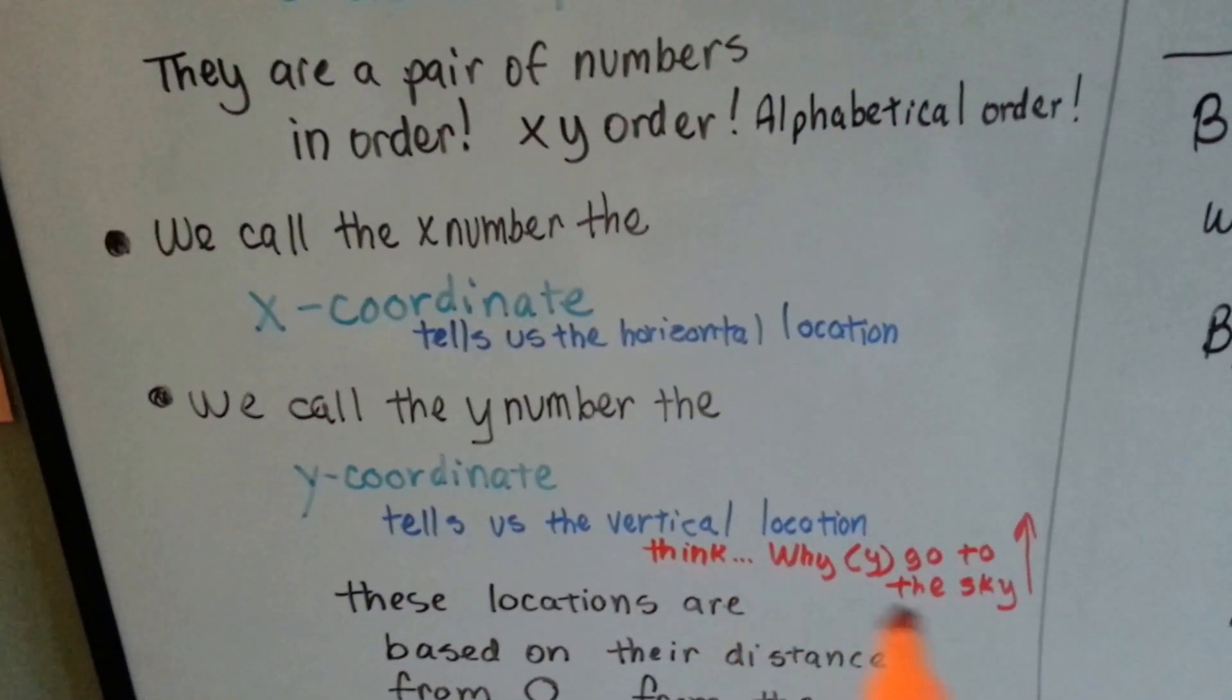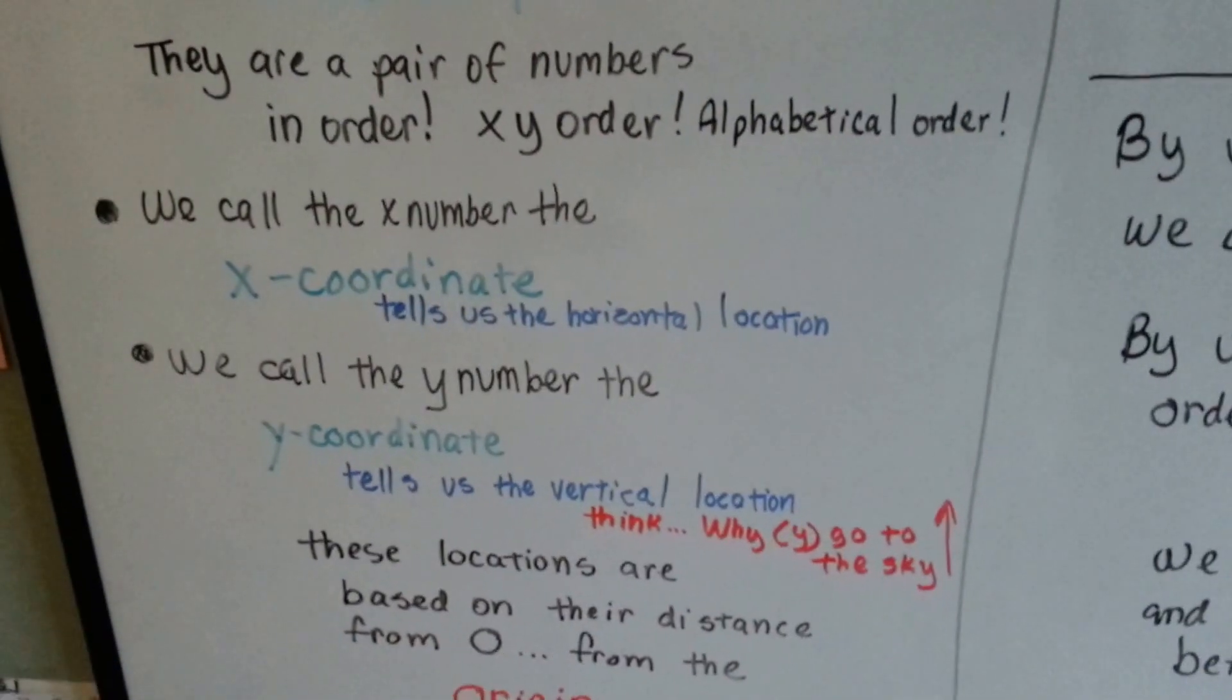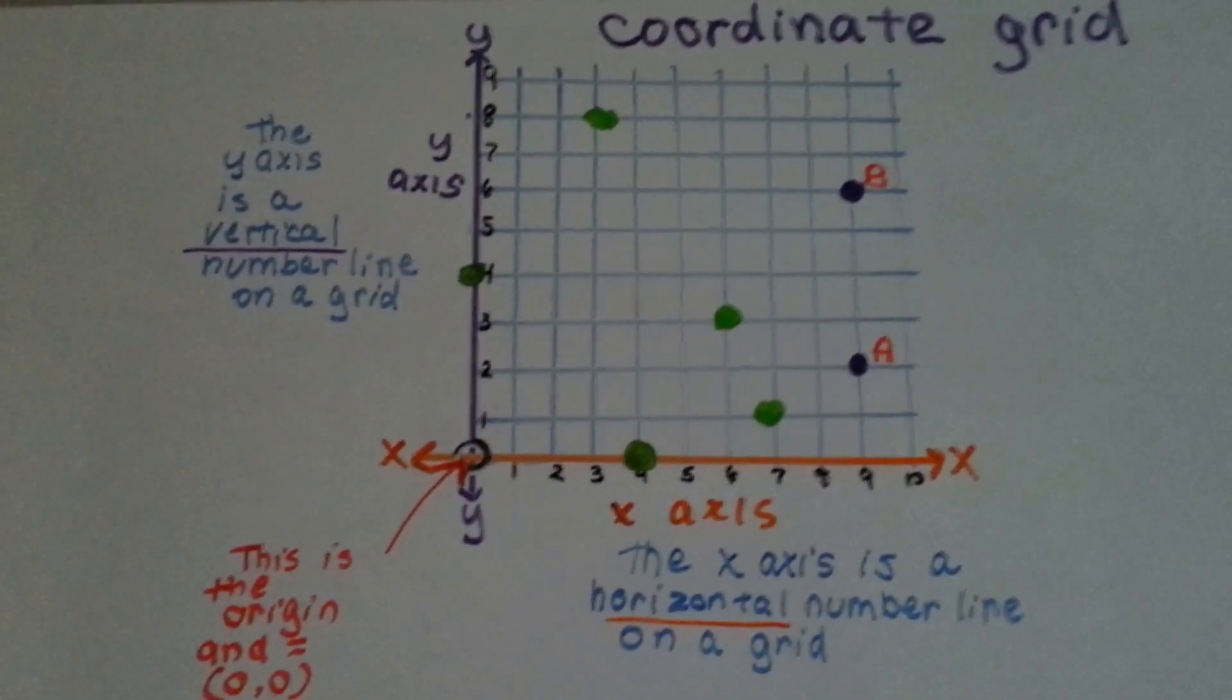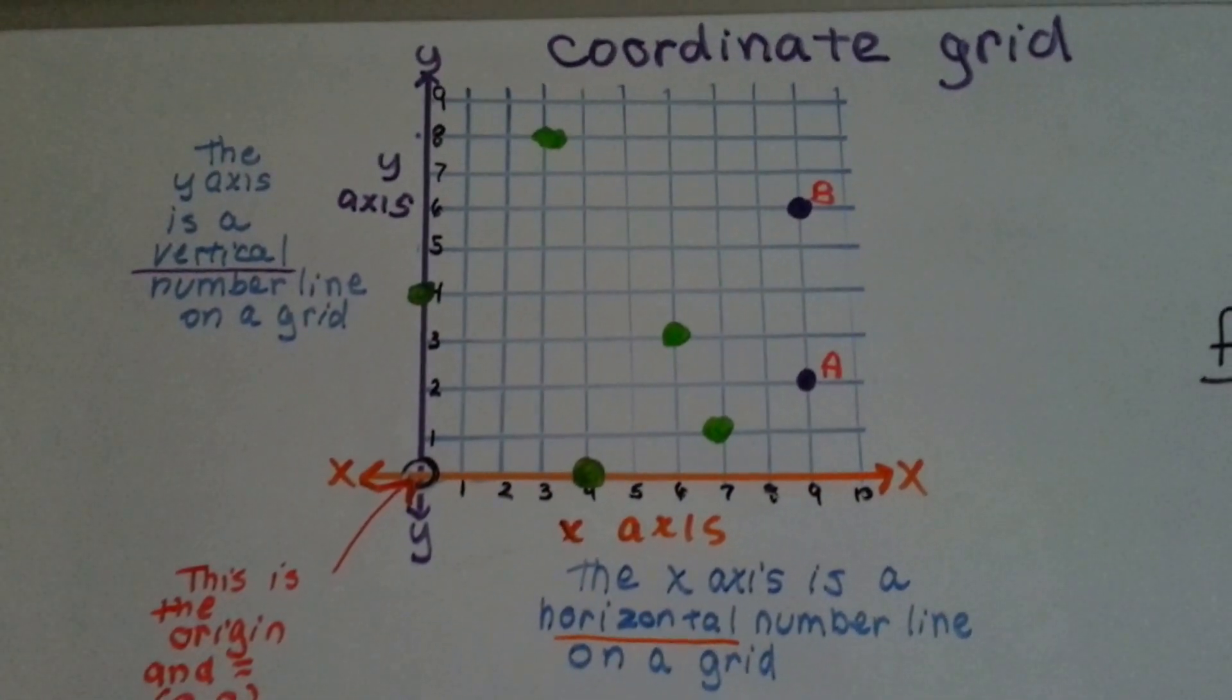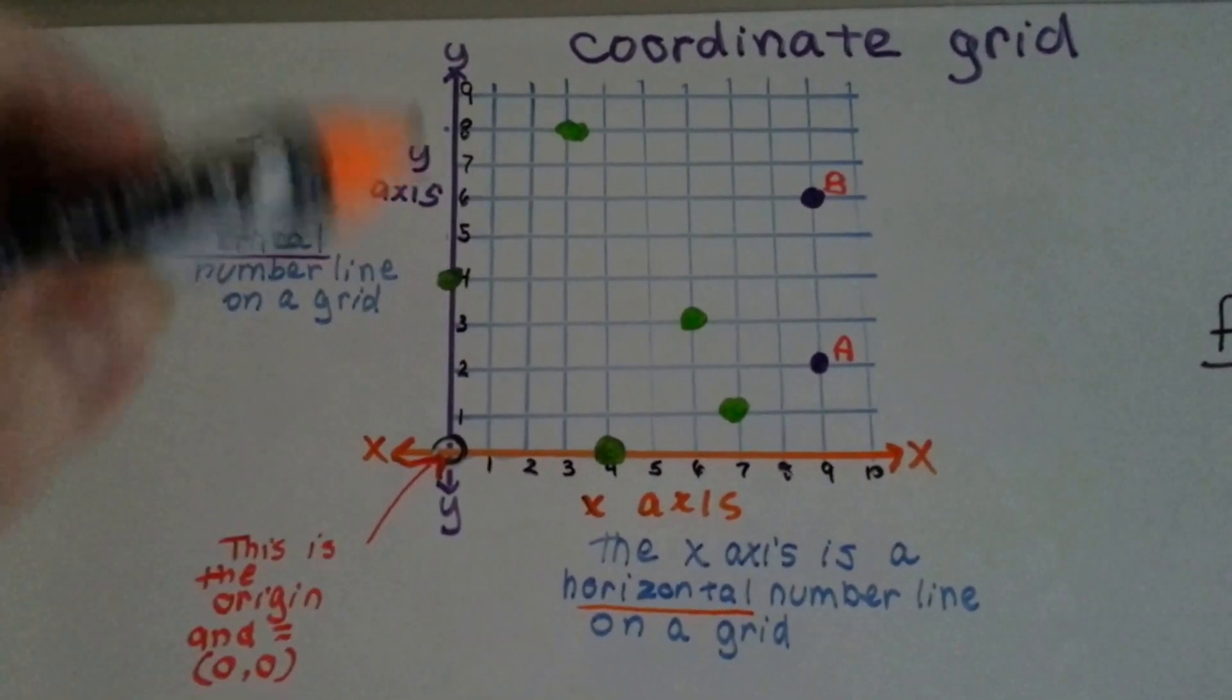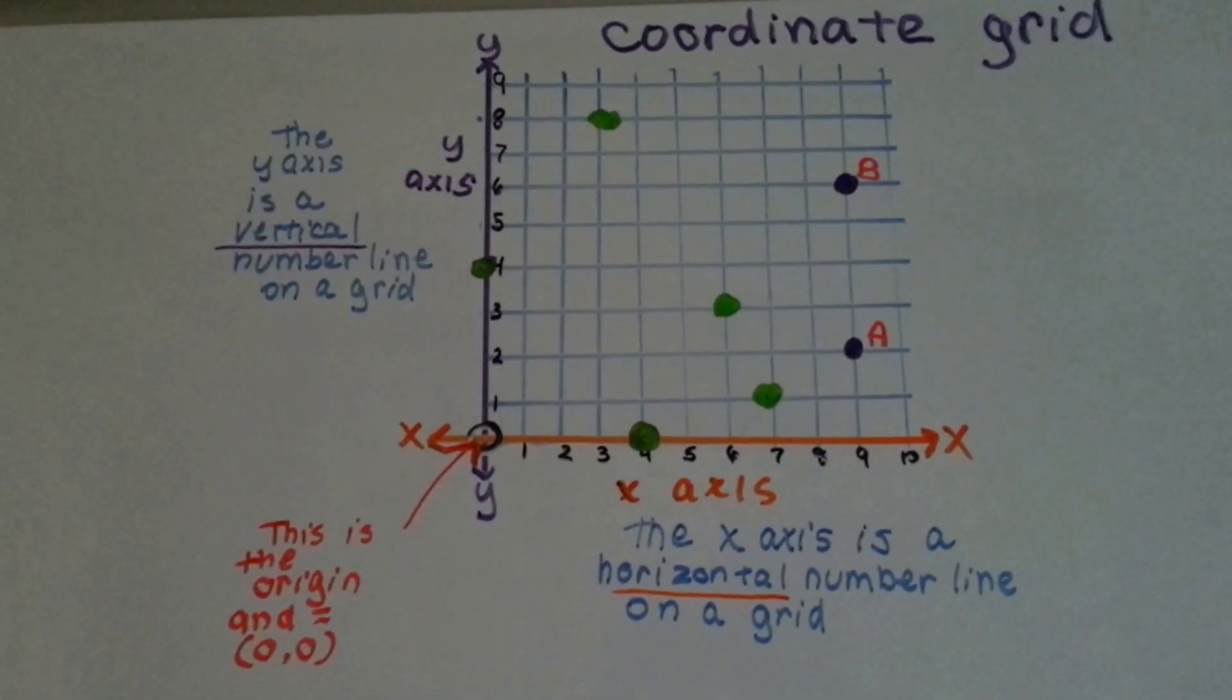Keep thinking, y go to the sky, because when people look at a coordinate grid, many times they forget which line is which. If you keep remembering y go to the sky, you'll always remember that the y is the vertical.